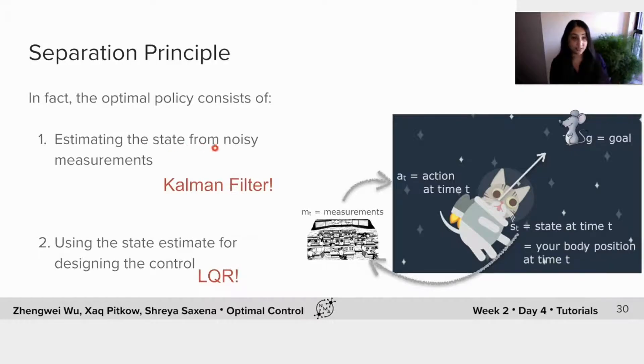One is estimating the state from noisy measurements. So given these measurements, how can we best estimate the state? And the second is actually using the state estimate for designing the control action at that time t.